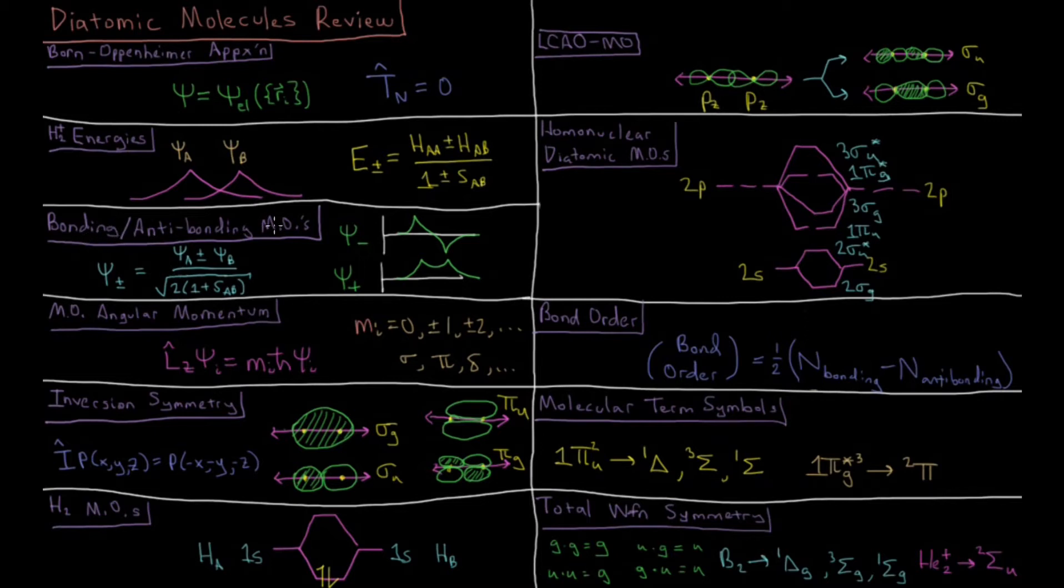In terms of molecular orbitals, we end up getting a bonding and an antibonding molecular orbital. The positive linear combination, psi+, builds up electron density between the two nuclei due to constructive interference, and this buildup of density leads to a bond, thus it is a bonding molecular orbital.